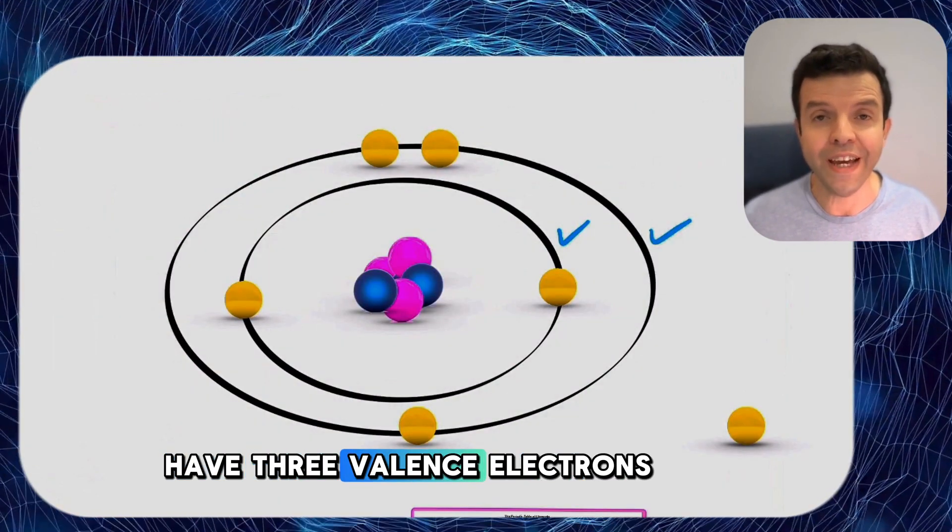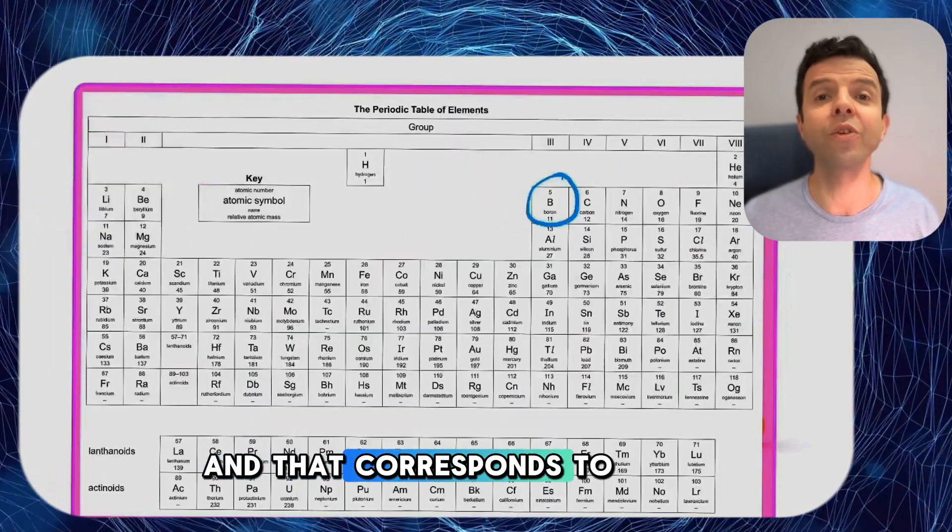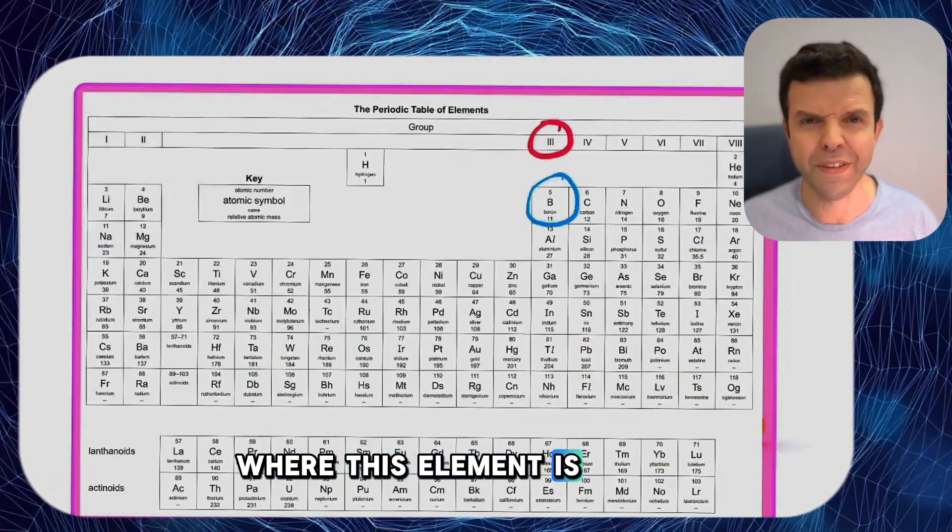Note also that we have three valence electrons in boron and that corresponds to the group number where this element is found.